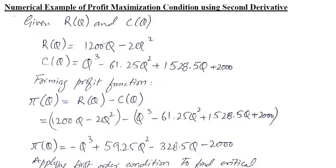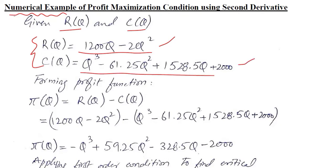After understanding the profit maximization condition using second order derivatives in a symbolic way, we are going to do it in a numerical way. The revenue and cost functions will be given in a numerical manner. As you can see, the revenue function is now in a numerical way as well as the cost function. We can make a profit function from these two functions simply by taking their difference — that is, revenue minus cost.